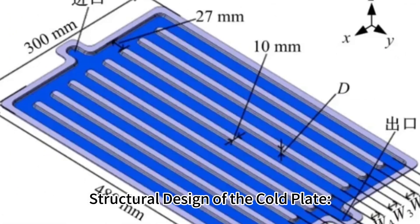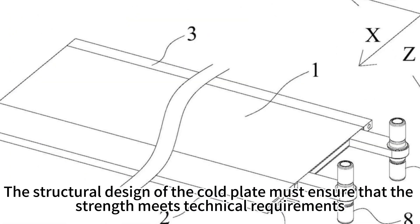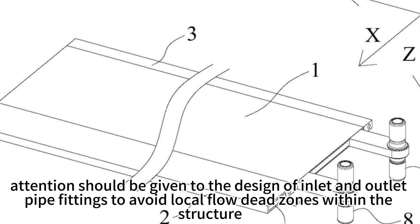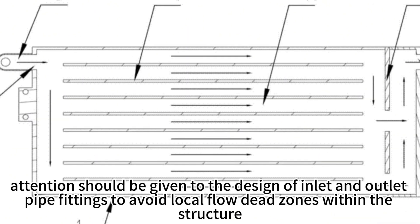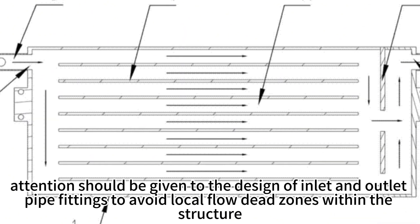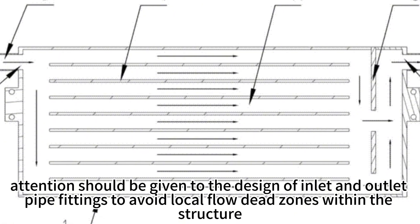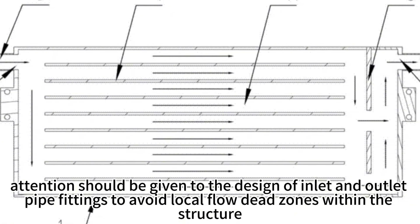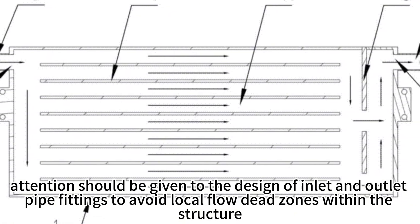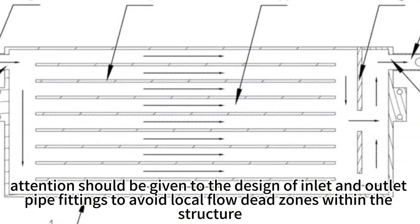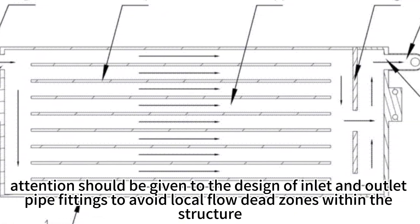Structural design of the cold plate. The structural design of the cold plate must ensure that the strength meets technical requirements. Additionally, attention should be given to the design of inlet and outlet pipe fittings to avoid local flow dead zones within the structure.